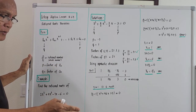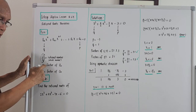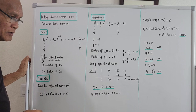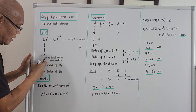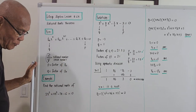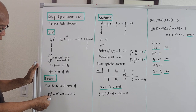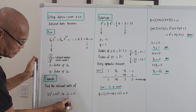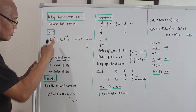Let's bring out an example to visualize the importance of computing p over q and the possible values of x. Example: Find the rational roots of the polynomial 2x cubed plus 11x squared minus 7x minus 6 equals zero. In this equation, the highest power of x is three, and the pure constant term is negative six — this is a-sub-zero.